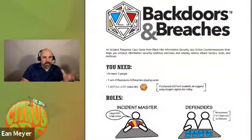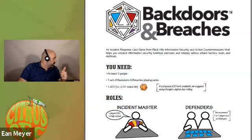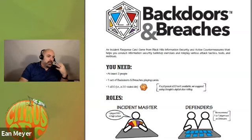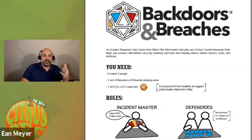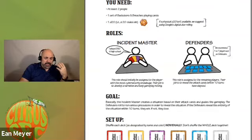Backdoors and Breaches is a card-based game. You have a deck of 52 cards, just like a standard deck, but broken up into specific categories: initial compromise, pivot and escalate, persistence, C2 and exfil. You also have inject cards — things that come up in the game that are sometimes good and sometimes bad. The defenders get four procedure cards — written procedures they know very well and have documented — and they get a bonus for those.